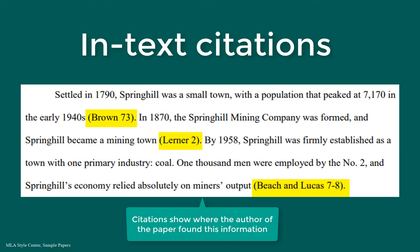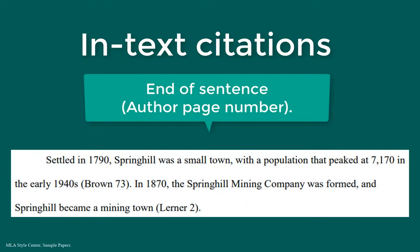MLA in-text citations include the author's last name and the page number, if available. There are two ways to use in-text citations. The first way is to put the citation at the end of the sentence, where the whole citation is in parentheses.